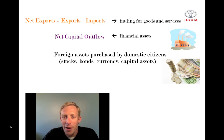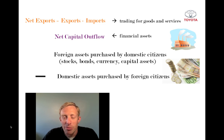But since it's a net number, we have to subtract something. And in this case, what we're going to do is subtract the U.S. assets that are purchased by foreign citizens. So if someone from Greece buys a U.S. government bond, or someone from China buys a bunch of U.S. dollars, that's going to be subtracted from the U.S. net capital outflow. So the net capital outflow are the foreign financial assets purchased by domestic citizens, minus the domestic financial assets purchased by foreigners.